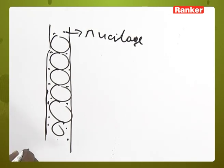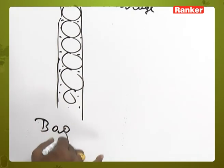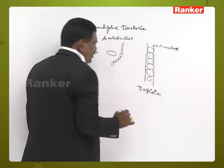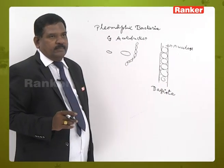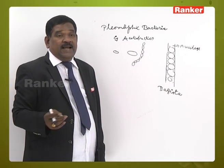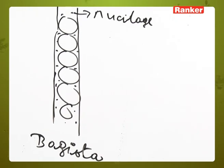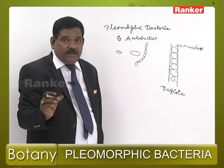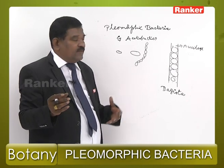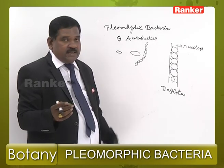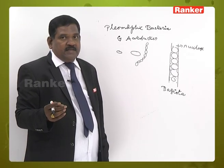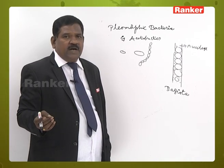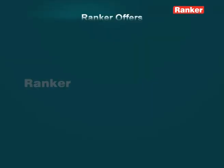An example is Bagiota. These are thread-like bacteria with mini spherical-shaped bacteria, and they appear thread-like because they are attached to one another with the help of mucilage. These are the different shapes we observe in bacteria.